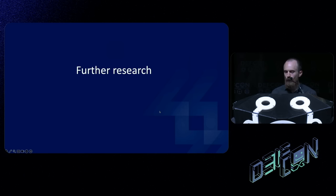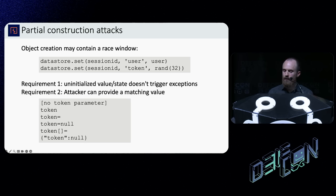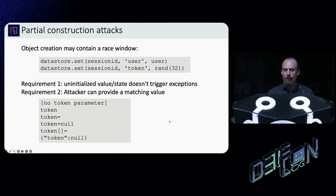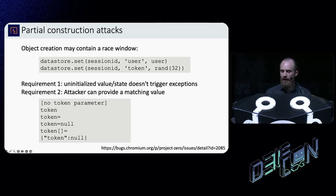I focused on email-based attacks during my research, but where else can you find these things? Basically everywhere. One pattern you may well encounter is partial construction attacks. These occur when an object is created in multiple steps, creating an insecure middle state — like you can see in the code snippet here where a token variable is briefly not set. This type of attack is most likely to work on applications that support default or null type values and don't just throw exceptions when they encounter them — so think SQL, PHP. For a completely different type of partial construction attack, check out the linked vulnerability found by Natalie Silvanovich in Google's WebRTC implementation in Duo.